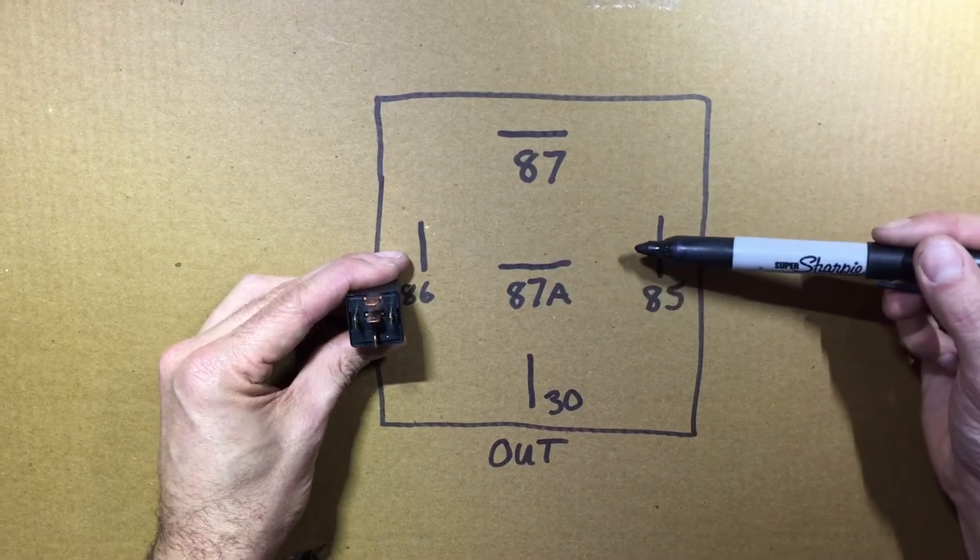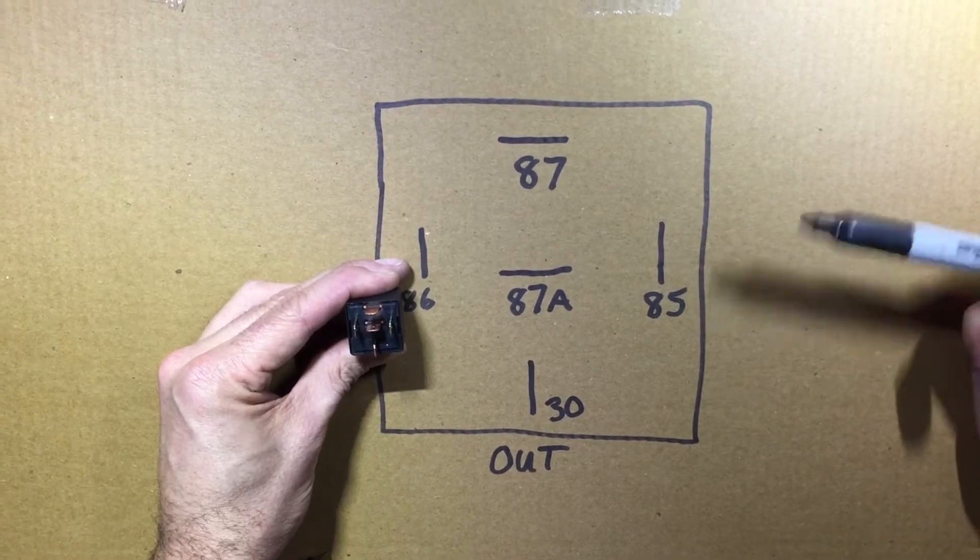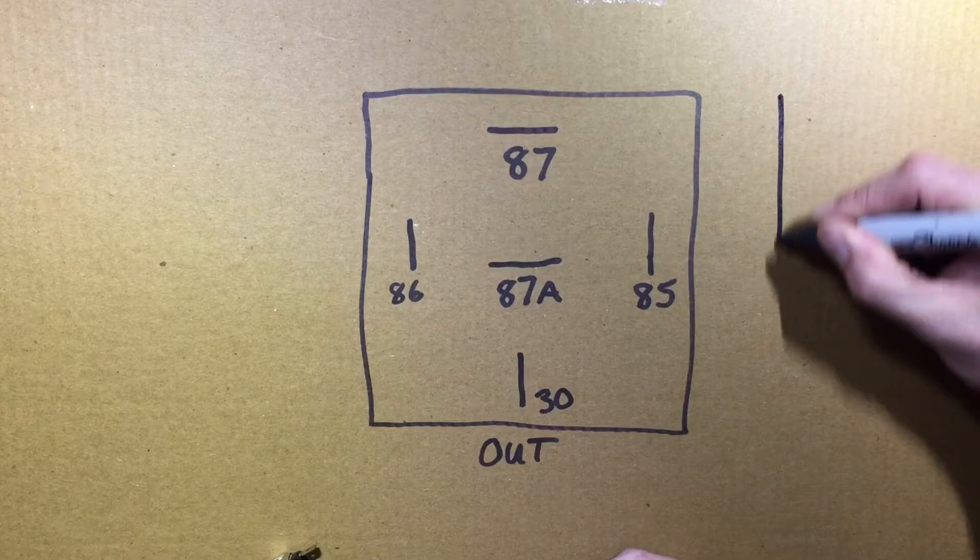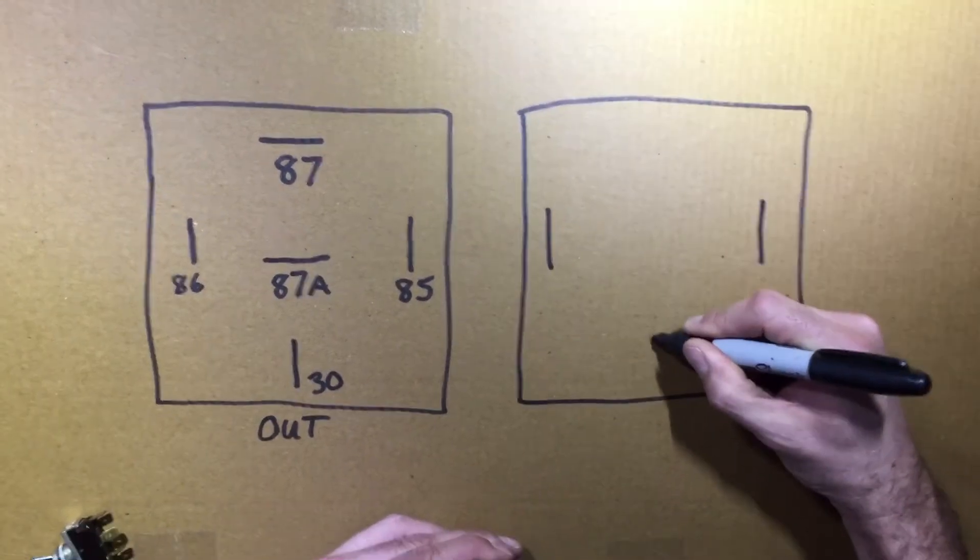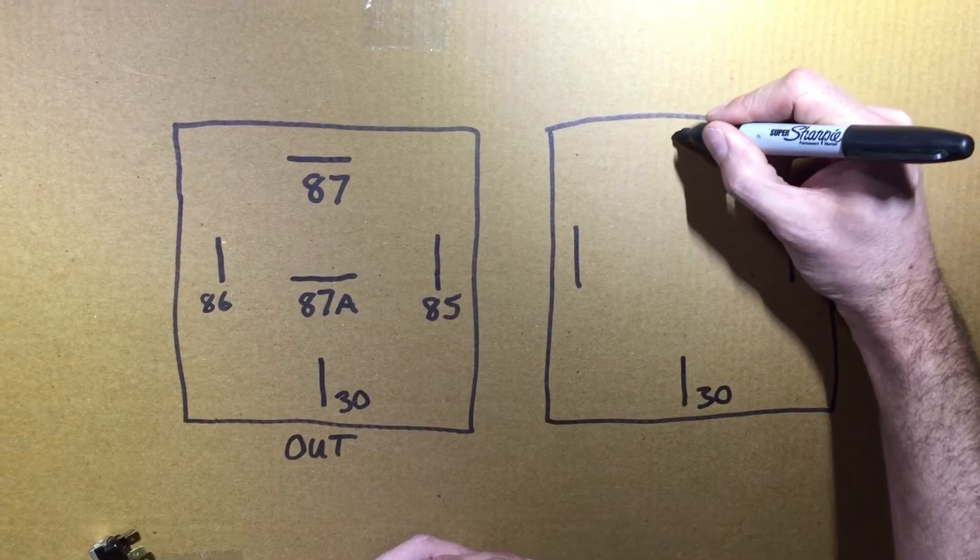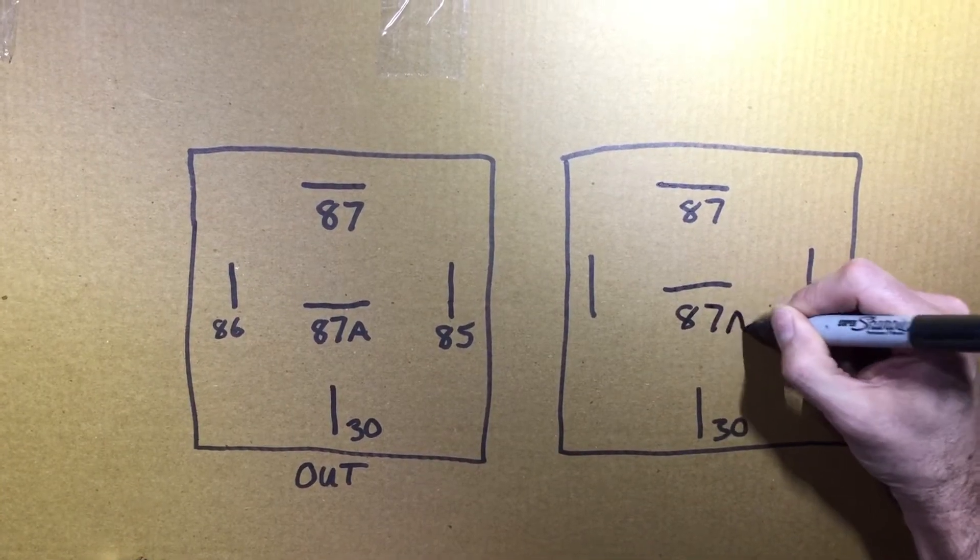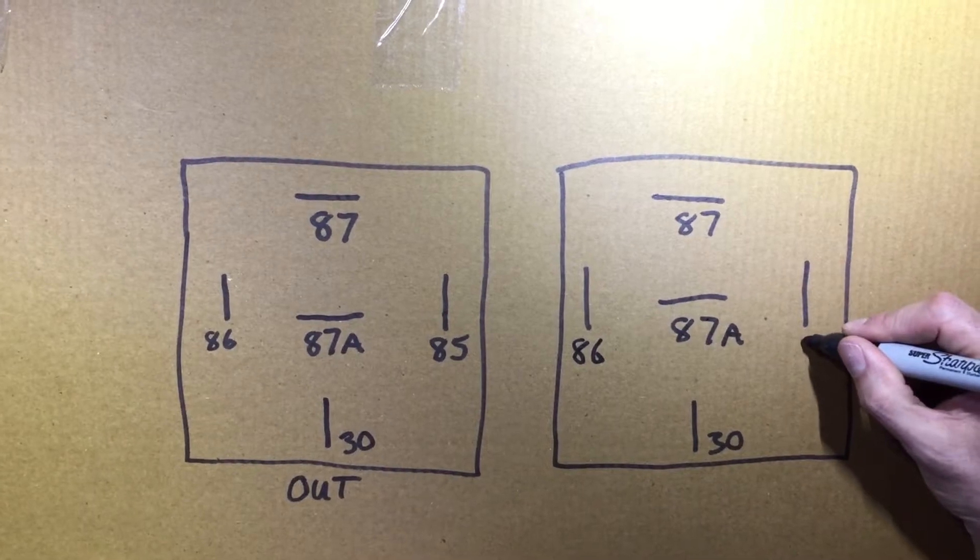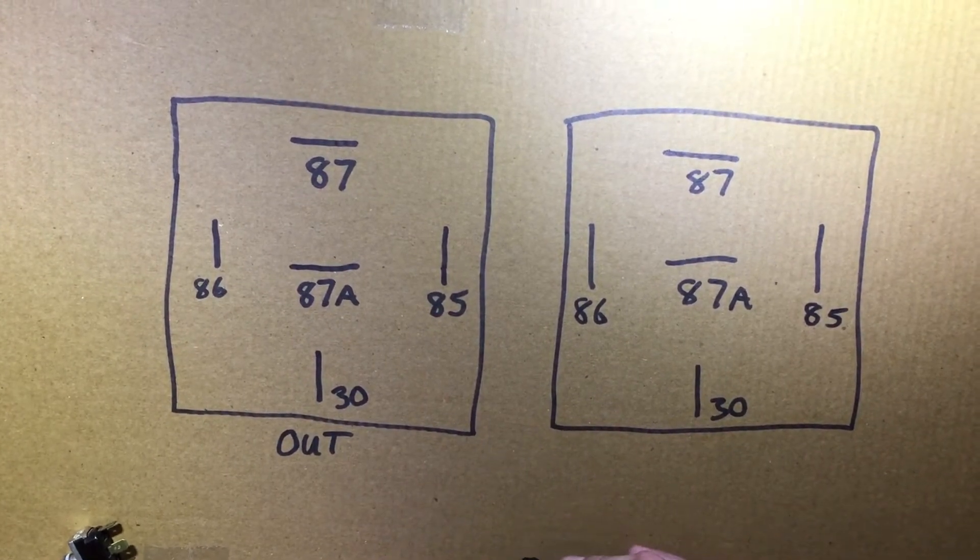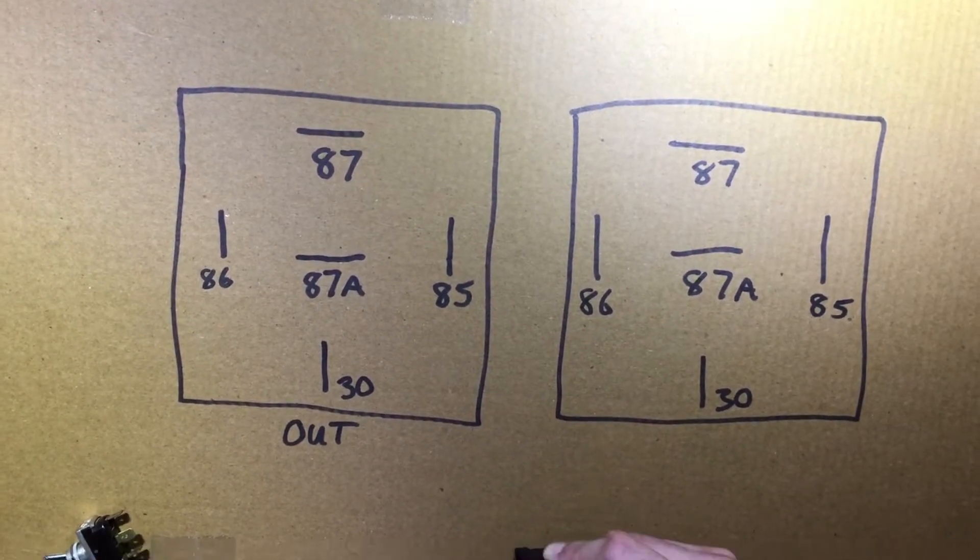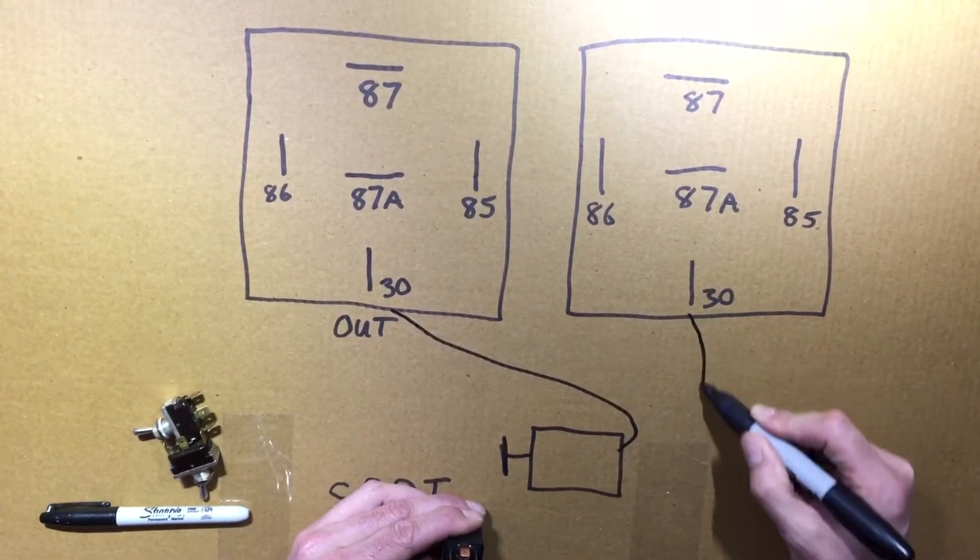We're going to use two of these wired together to replace a double pole double throw. So if I take a second relay, once again we put 30, we're going to do 87, 87A, 86, and 85. Now we are, what we really want for our motor down here, for our motor, it's a horrible motor but this is my motor. We're going to wire this to the motor, we're going to wire this to the motor.